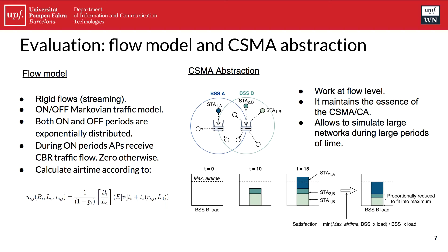During the on-periods, the access point receives a constant bit-rate traffic flow for each of the stations, and during the off-periods, obviously zero. Both on and off periods are exponentially distributed. Once a traffic flow is created, we calculate the airtime following a formula, so we can then pass it to the CSMA/CA abstraction.